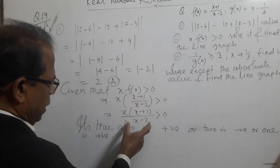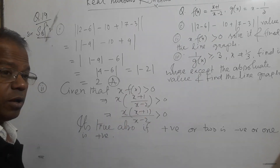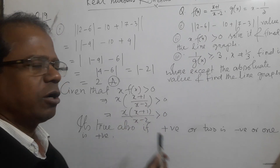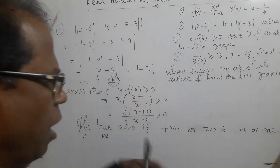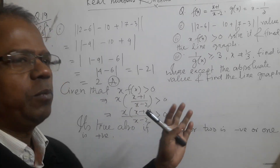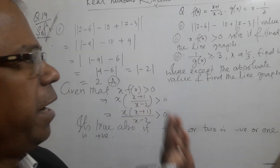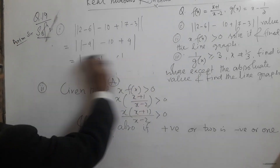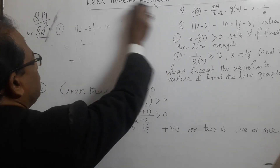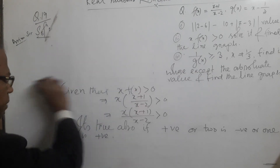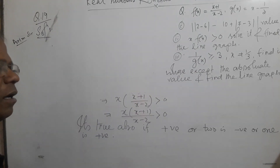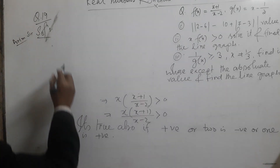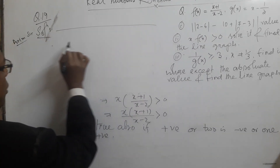For the second problem, given that x times f(x) is greater than 0, we find the values of x. If x equals 0, x equals minus 1, x equals 2 — we check which intervals are positive or negative. You should be clear on this system from the previous lectures on this channel.